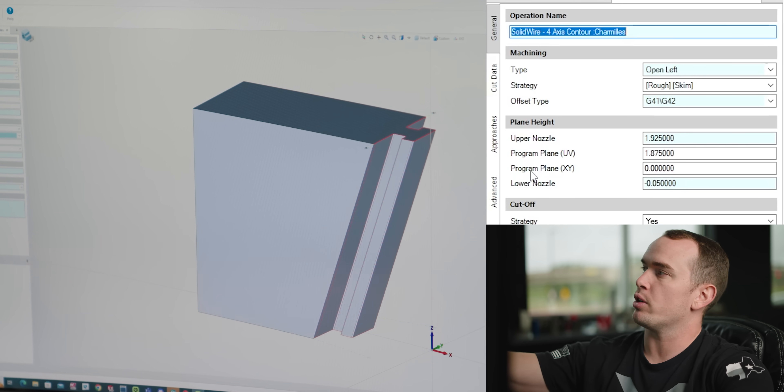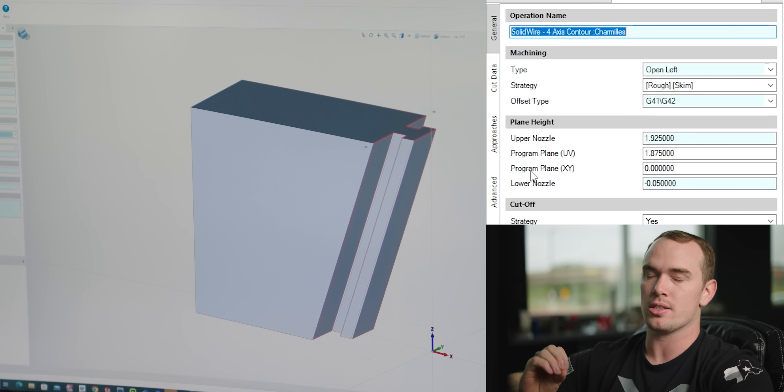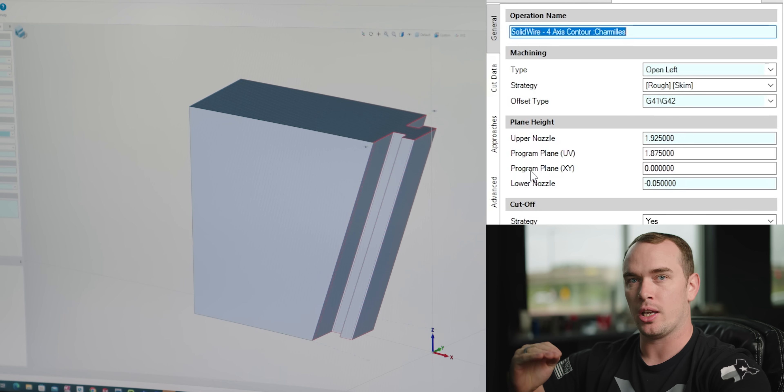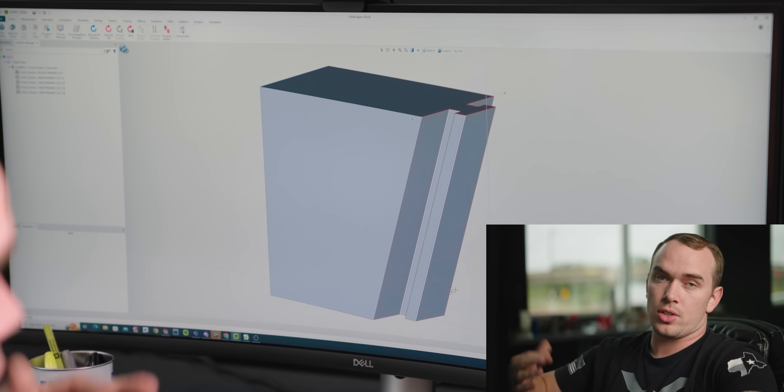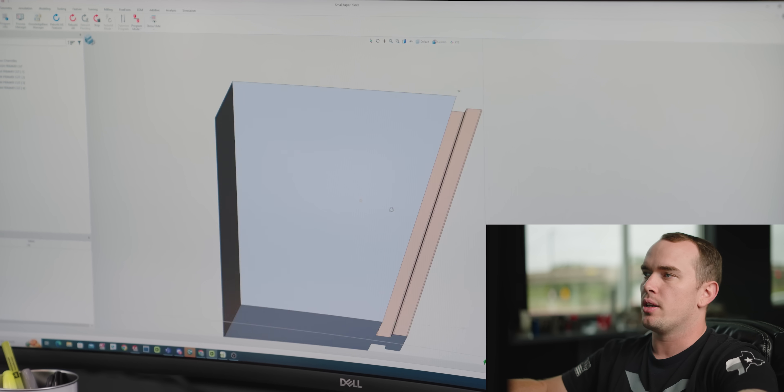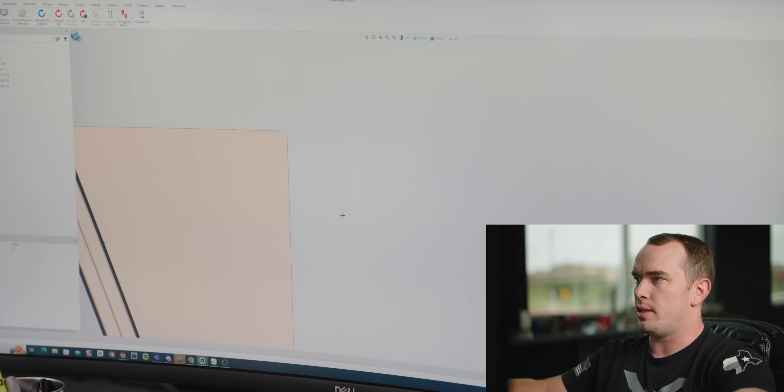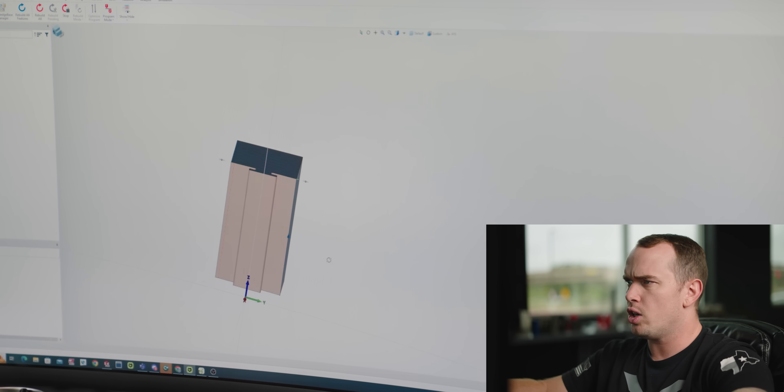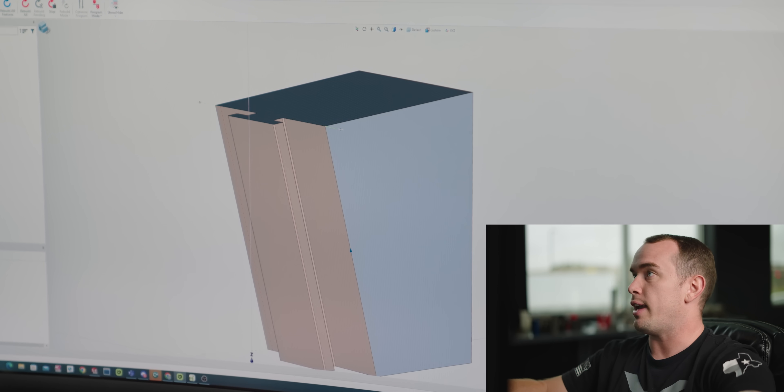Now this UV program plane is actually going to be an incremental distance from the bottom of your angle to the top of your angle. And once you have that figured out really it's all about just selecting the faces that you want to cut on your wire EDM and then once you have that done all you need to do is create a feature.